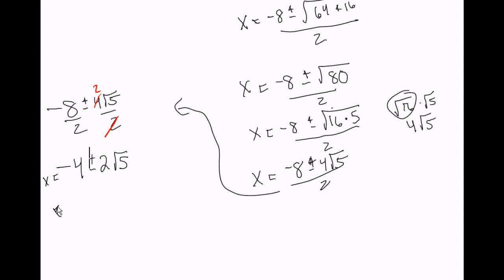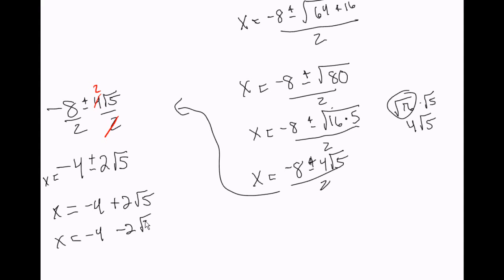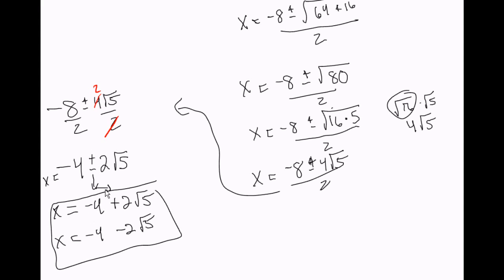What you really have is two answers. You have x equals negative 4 plus 2 square root of 5, and you have x equals negative 4 minus 2 square root of 5. That plus or minus means you have two separate answers — one with a plus and one with a minus.